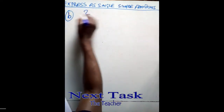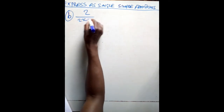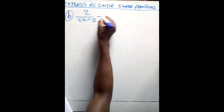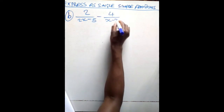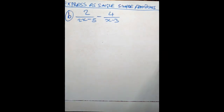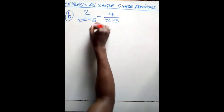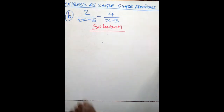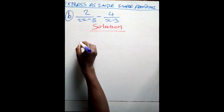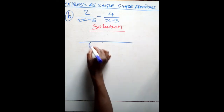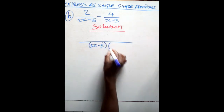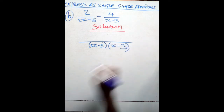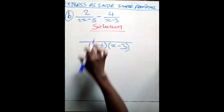Now problem B: 2 over (2x minus 5) minus 4 over (x minus 3). We have to express this as a single simple fraction in its lowest term. This is subtraction of fractions. So what do you do? You first find the lowest common denominator. To find it, you draw a straight line, then you write (2x minus 5)(x minus 3) — multiply the two denominators in brackets.